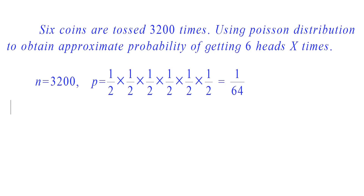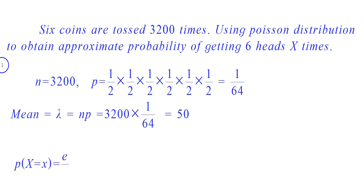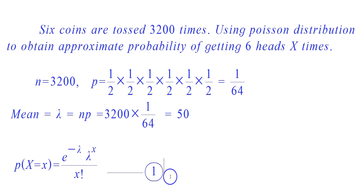Now we have to find the parameter lambda. We know that lambda is equal to NP, which is equal to 3200 into 1 by 64, that is equal to 50. We know that the Poisson distribution formula is e raised to minus lambda, into lambda raised to x, by x factorial.